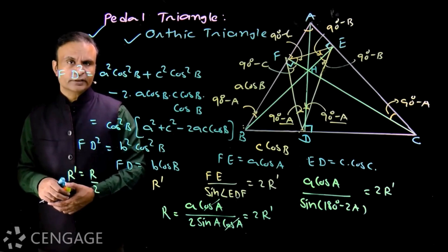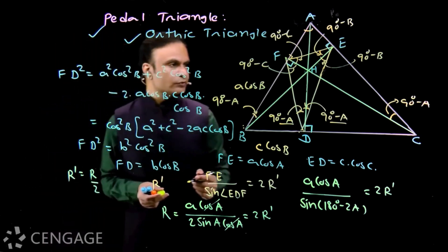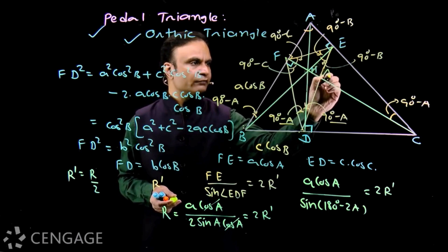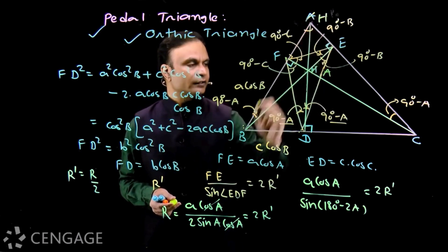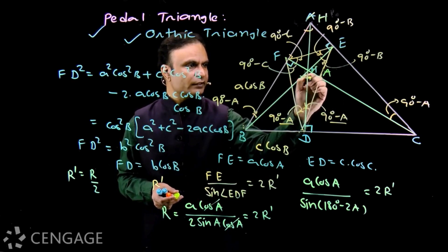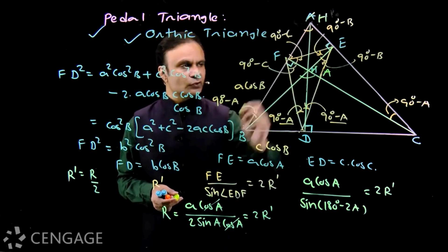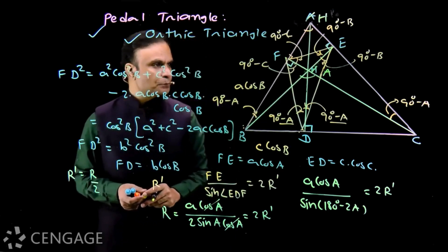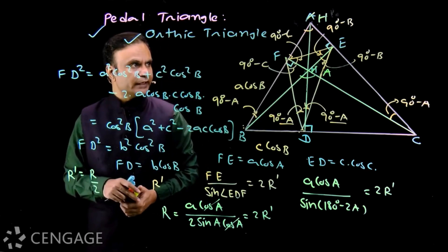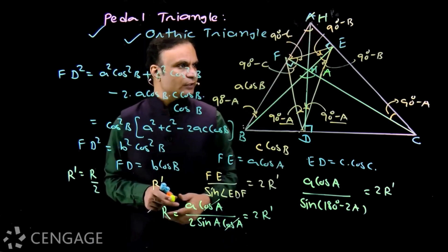These results hold for an acute-angle triangle. Now suppose triangle ABC is obtuse with angle A being obtuse, so the orthocenter H lies outside the triangle. In this case we swap the roles of H and vertex A in the figure. Triangle DEF is still the pedal triangle, with D, E, F as feet of perpendiculars from the orthocenter onto the sides.